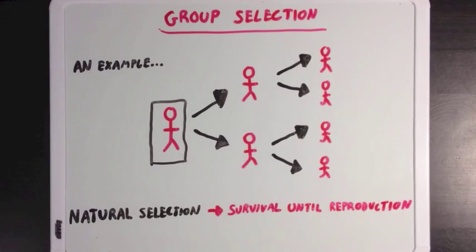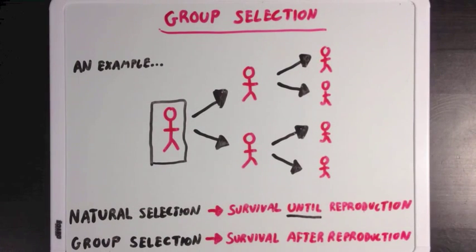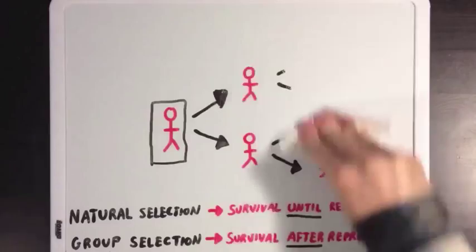Natural selection will typically look for traits that help with survival until the age where reproduction is possible. But group selection accounts for all those other traits that might help with survival after reproduction is no longer possible.